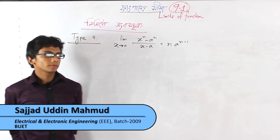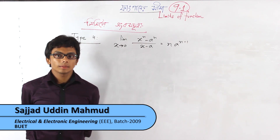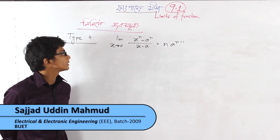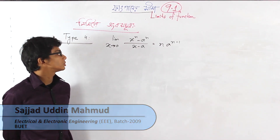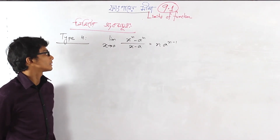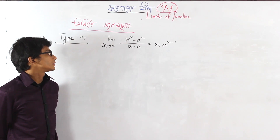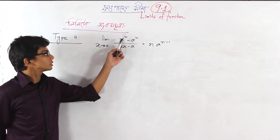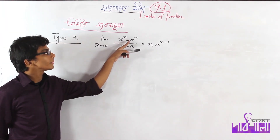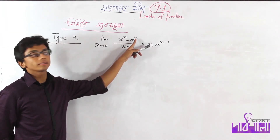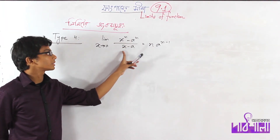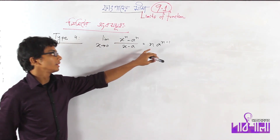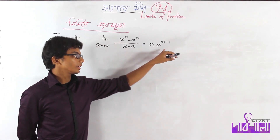I am going to show you Type 4. The limit as x tends to a of x to the power n minus a to the power n, divided by x minus a, and the answer is n times a to the power n minus 1.